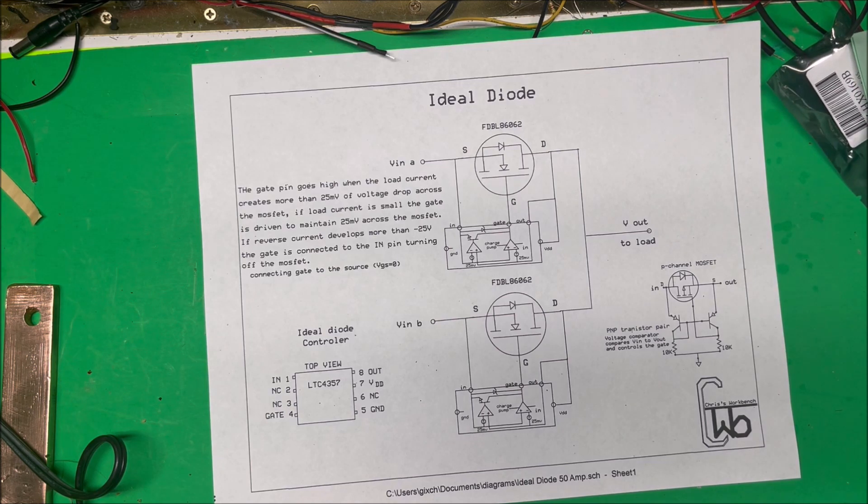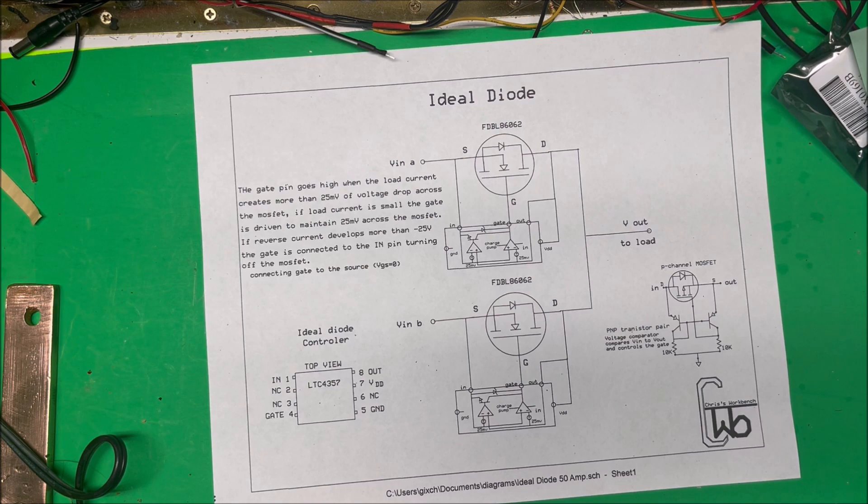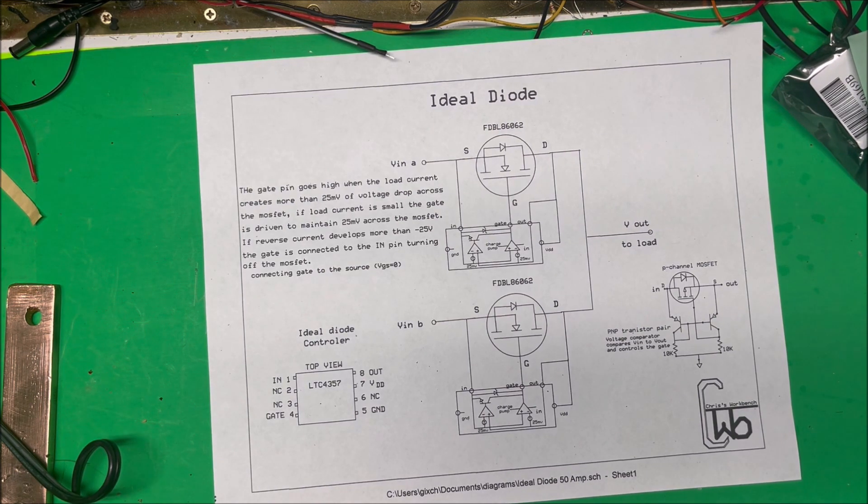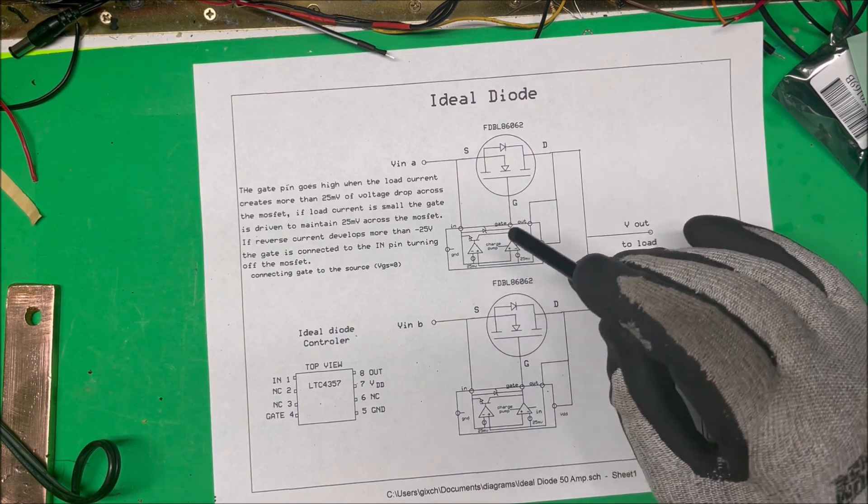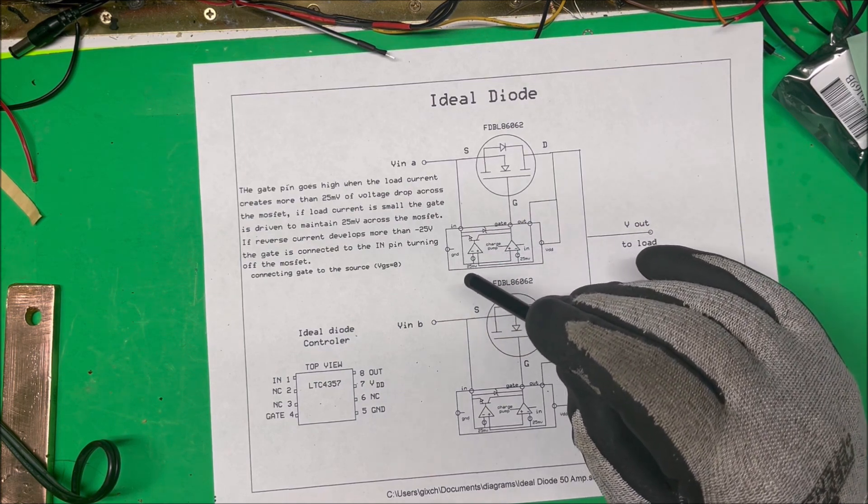If the load current is small, the gate is driven to maintain that 25 millivolts across the MOSFET. If the reverse current develops more than minus 25, the gate is connected to the IN pin, which is your source here, and that turns off the MOSFET.